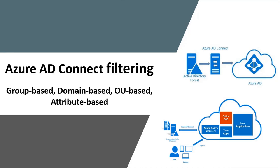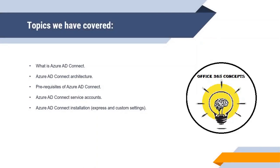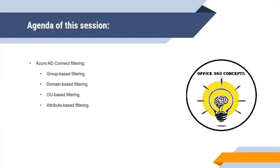Welcome to the sixth video of this series. We have previously discussed Azure AD Connect, its architecture, prerequisites, service accounts, and installation with express and custom settings. In this video, I will be discussing how to configure filtering within Azure AD Connect, the benefits of filtering, the types of filtering configuration available, and a practical demonstration of how to configure filtering.